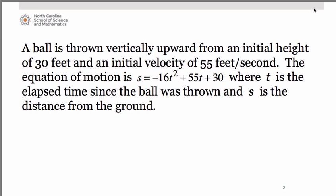Suppose we have a ball that is thrown vertically upward from an initial height of 30 feet and an initial velocity of 55 feet per second. The equation of motion is s equals negative 16t squared plus 55t plus 30, where t is the elapsed time since the ball was thrown and s is the distance from the ground.